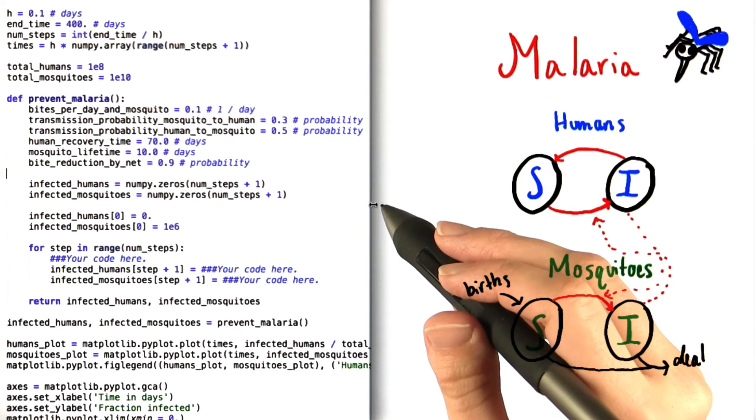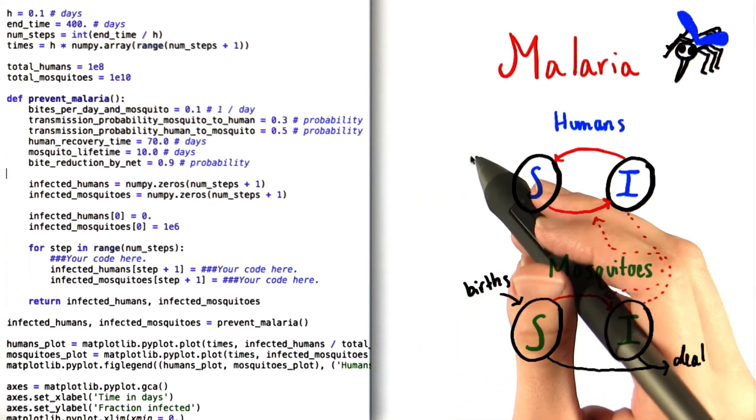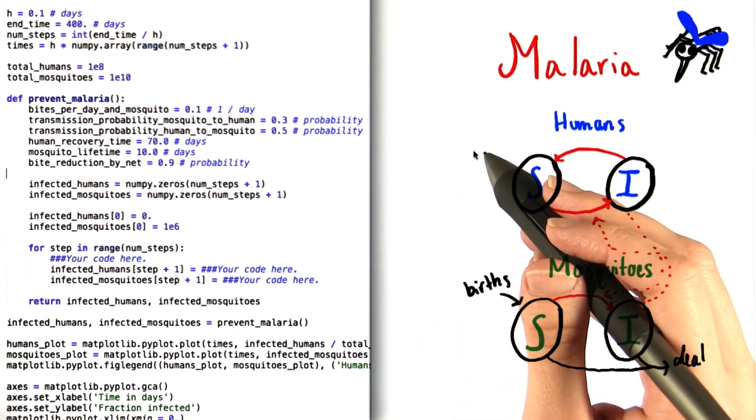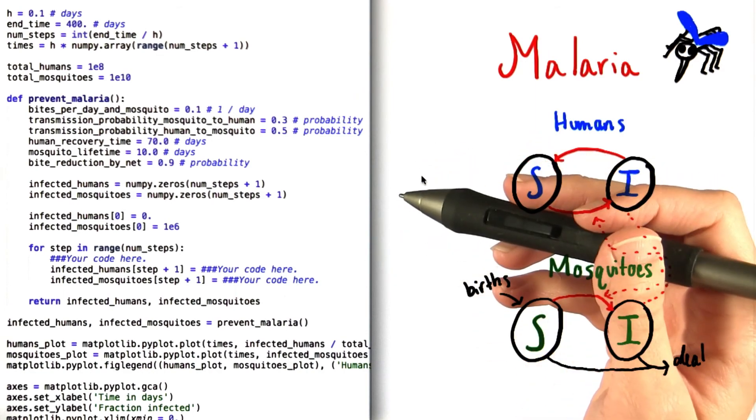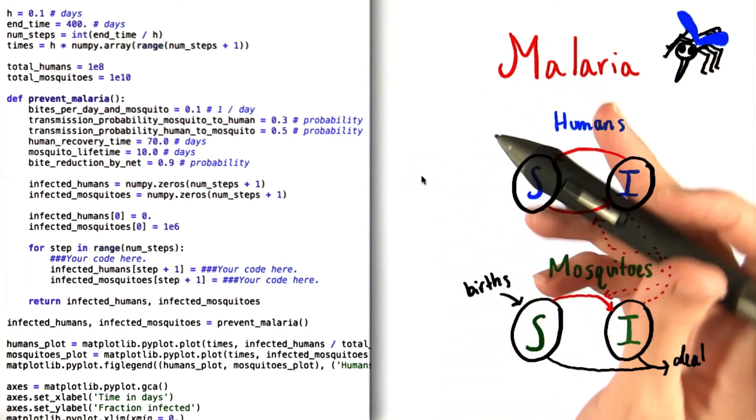This problem requires you to take into account all the factors affecting the infected population and to include them using the forward Euler method. Think critically, keep track of your units, and good luck. If you have any trouble at all, visit the forums.